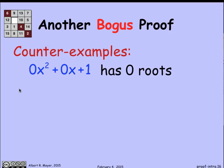Let's look at a counter example. What about the polynomial 0x squared plus 0x plus 1? It doesn't have any roots. It's just a constant 1, which never crosses the origin. So it's got no roots. What about 0x squared plus 1x plus 1? That's a 45 degree line, the y equals x line. And it only crosses the origin once. It has only one root.